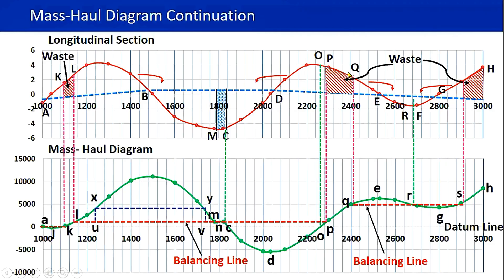Here the profile changes like that. So now you see: here is a cut, here there's a fill, here there's a cut again, here there's a fill, and here there's a cut. Now when you compare your longitudinal section together with the mass haul diagram, you can see the relationship clearly.